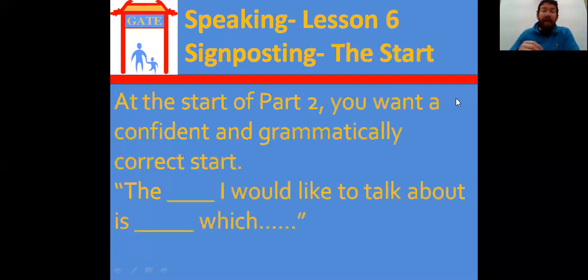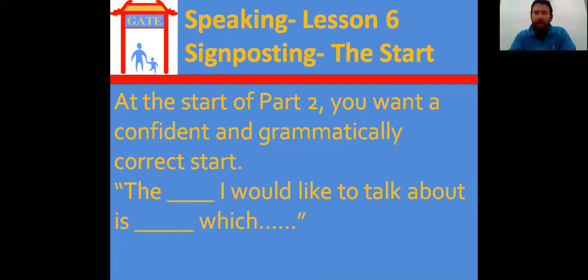So at the start of part two, the basic signposting language is something that just tells the examiner which topic you have chosen to talk about. So you would say the movie I would like to talk about is Transformers 3, which is an American film. I'll show you a bit more about that in a second. So you want this opening start for a couple of reasons. First of all, when you use this, it will sound more confident and it will make you feel more confident. Many students at the start of part two go, I want to talk about, yeah, oh, the movie I want, I want to talk about Transformers 3, which was one of the worst movies ever made. And they kind of don't have a clear start. And if you don't have a good start, you might start to feel more nervous and make more mistakes.